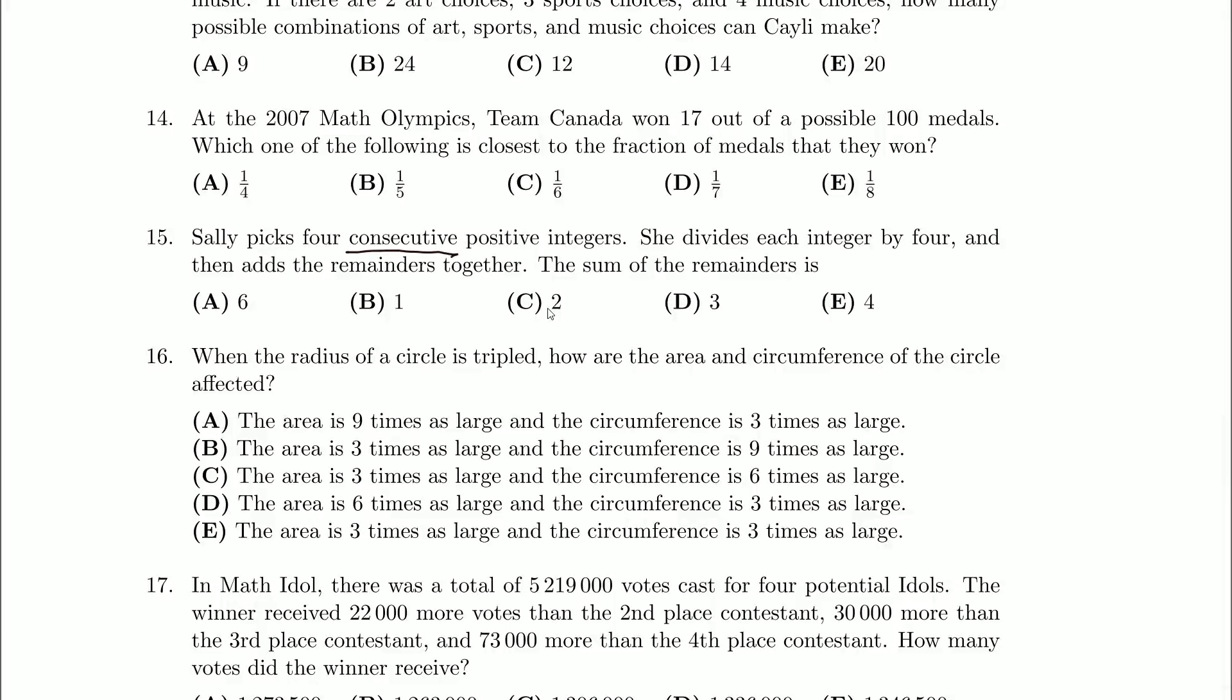Okay, so we need to figure out the sum of the remainders. Now you might be saying to yourself, I don't know what four consecutive positive integers Sally picked. The question is vague. Did she pick 1, 2, 3, 4? Did she pick 101, 102, 103, 104? Did she pick 52, 53, 54, 55? We have no idea. How could we possibly answer a question like this?